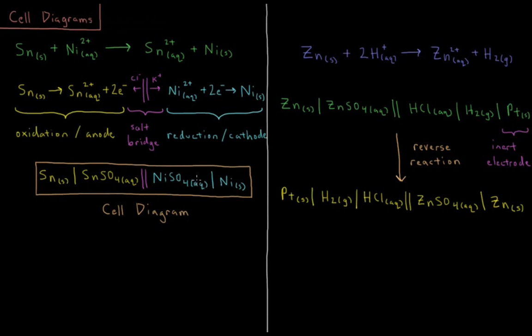Any electrochemical cell we can write a cell diagram for. It's just a diagram of the two half cells, the reaction arrow separated by a single bar, and the salt bridge separated by a double bar. Always remember to have oxidation and the anode on the left, reduction and the cathode on the right.